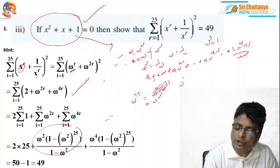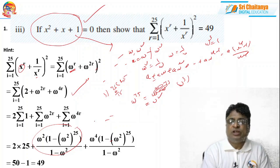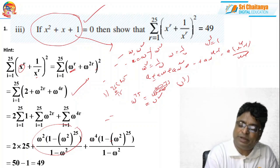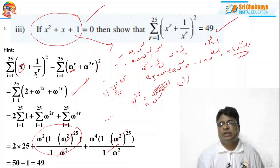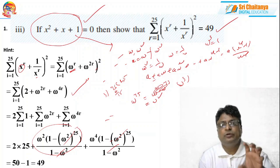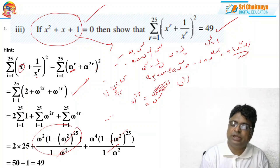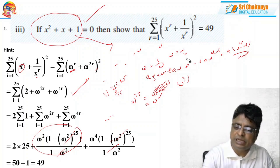After simplification, using ω³ = 1, the terms cancel: ω + ω² = −1, so 25×2 + (−1) = 50 − 1 = 49. The answer is 49. The beauty of this problem is that though it is in complex numbers, it covers three areas: complex numbers, quadratic equations, and progressions. This type of problem is very important for JEE Mains and Advanced examinations.